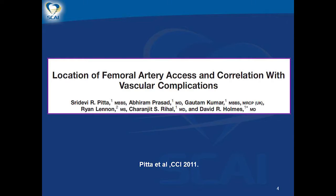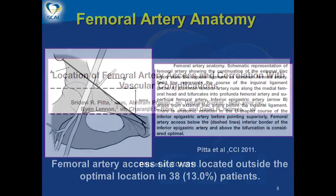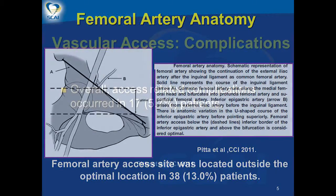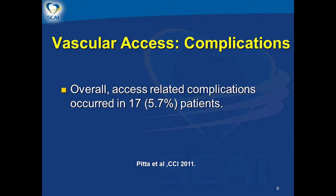Location of femoral artery access and correlation of vascular complications has been retrospectively evaluated using femoral angiograms of 300 patients undergoing percutaneous coronary interventions. The optimal location is above the femoral bifurcation but below the inferior border of the inferior epigastric artery; those above or below these landmarks are suboptimal. The femoral artery access site was located outside the optimal location in 13% of patients, and was associated with an increased risk of vascular complications. Overall, access-related complications occurred in 5.7% of patients.